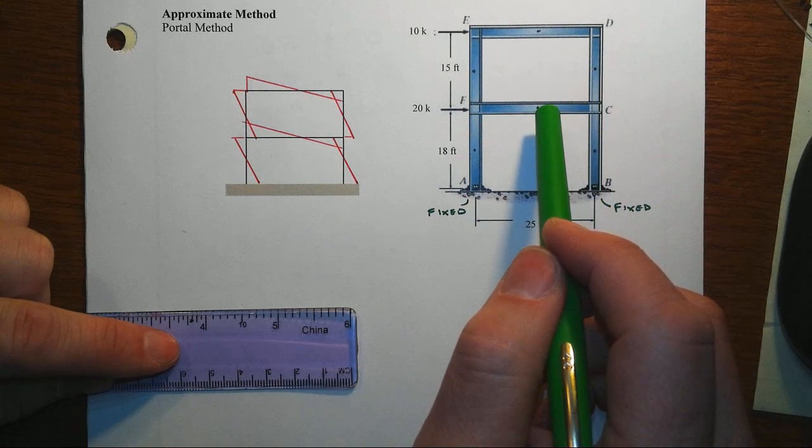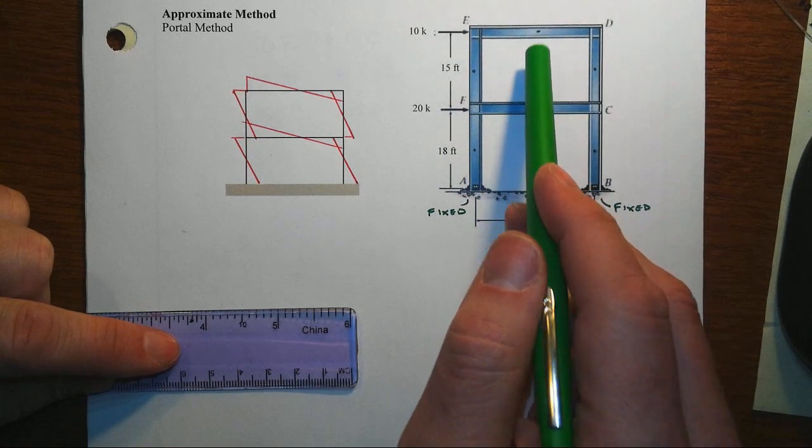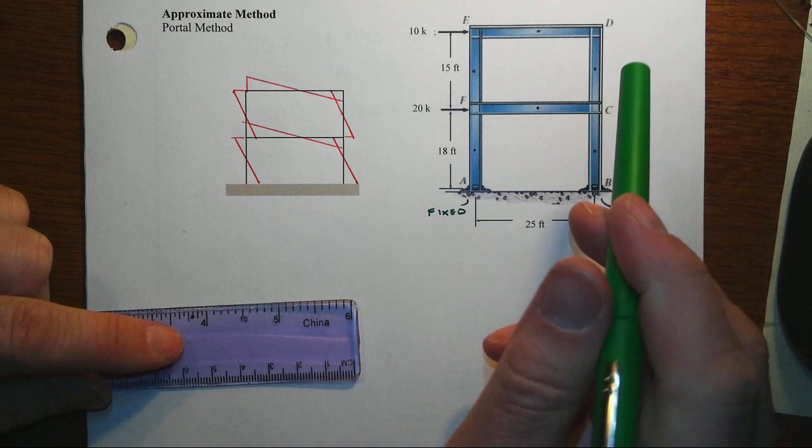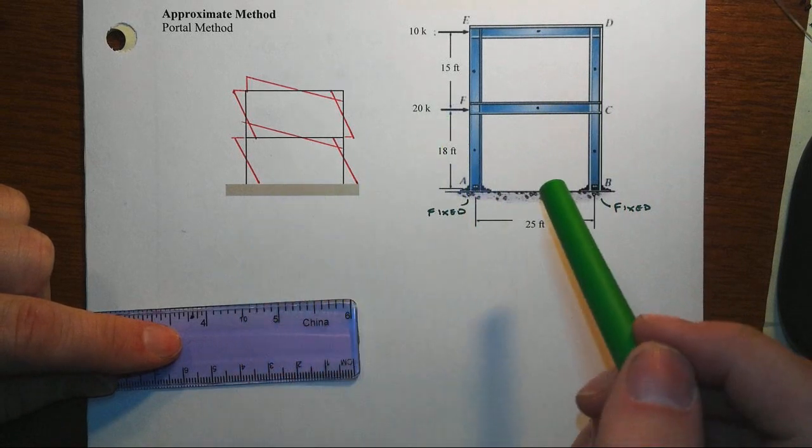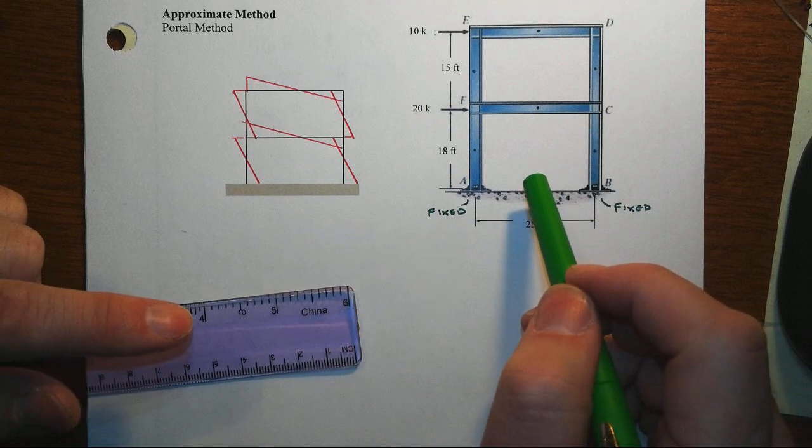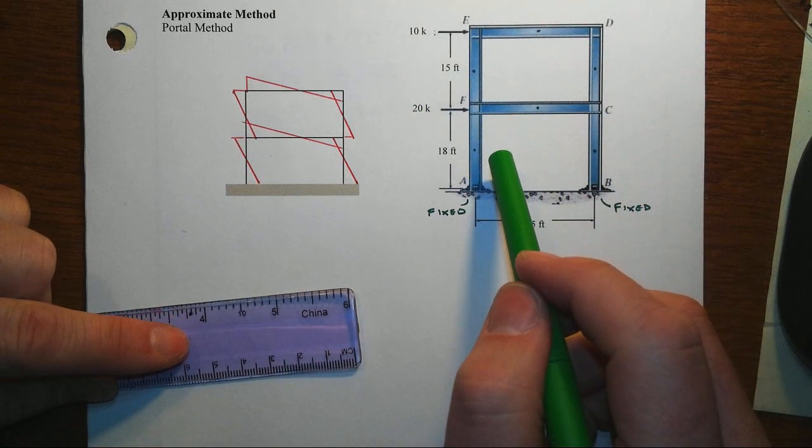We can also make assumptions about the inflection point for the beams being also in the middle, and that's not too bad. Certainly consistent with the anticipated moment diagram and the deflection shape that would go with this.